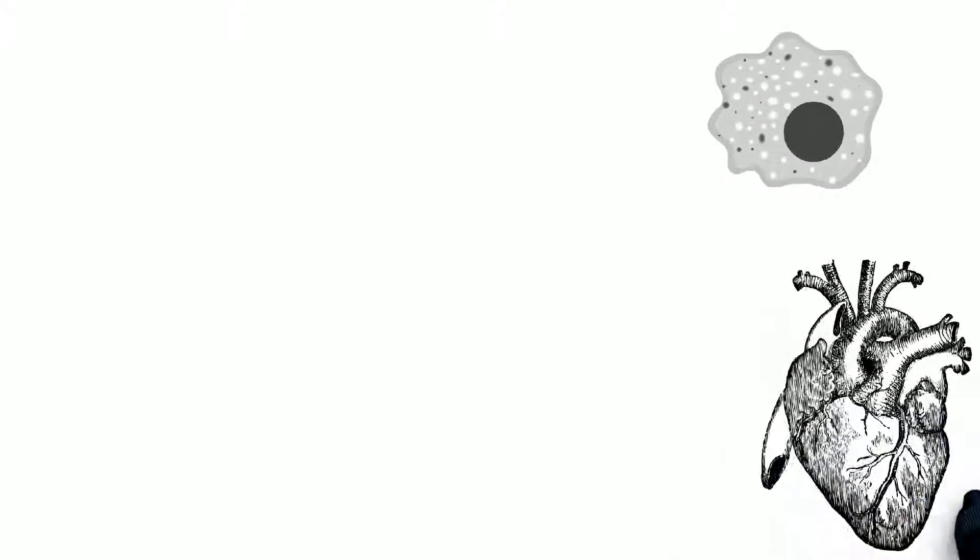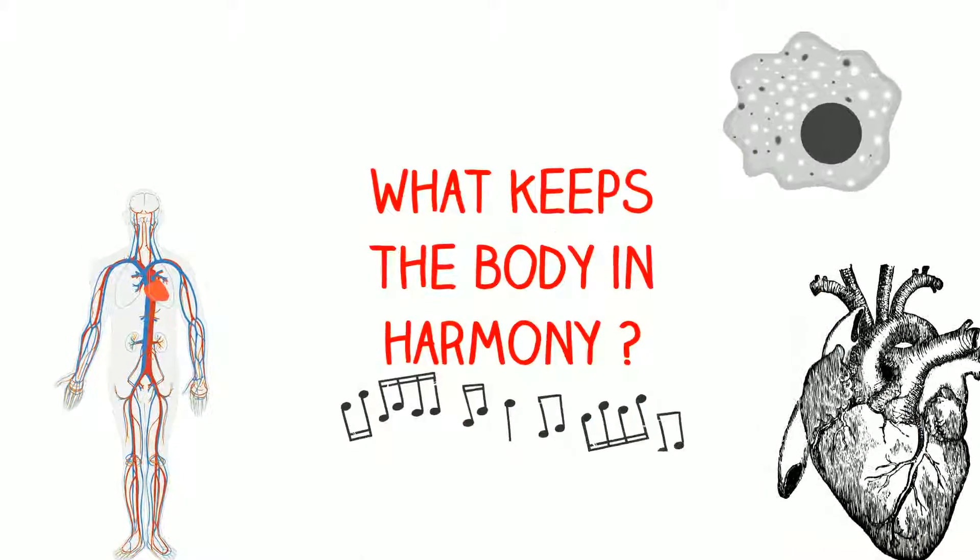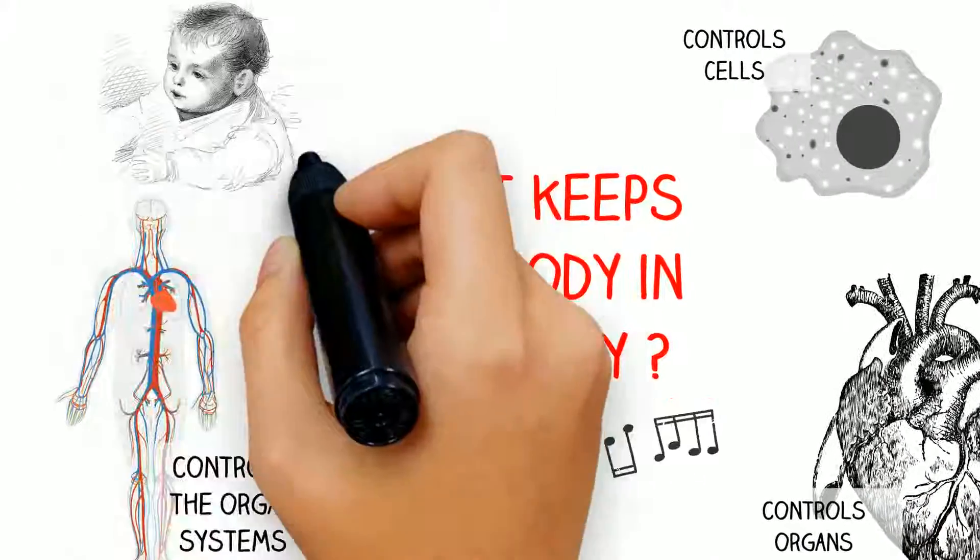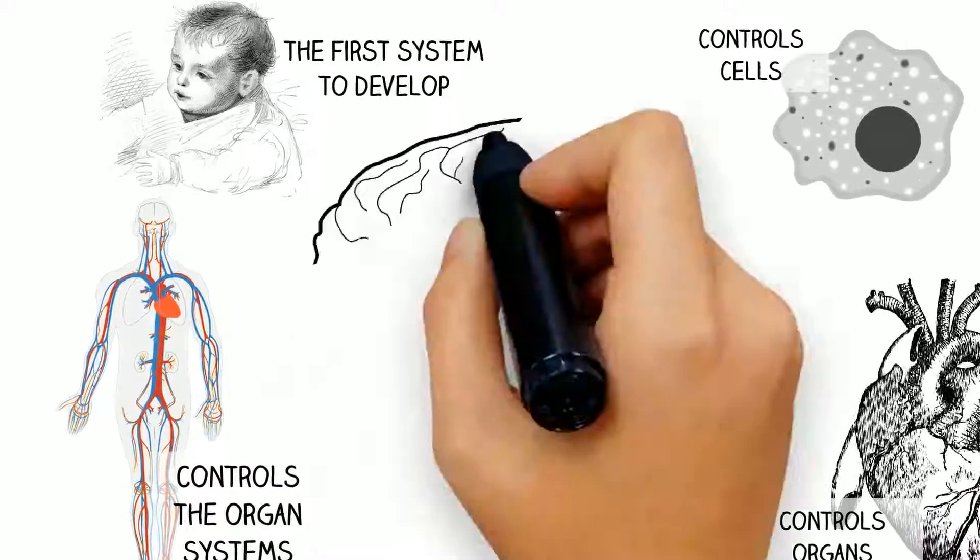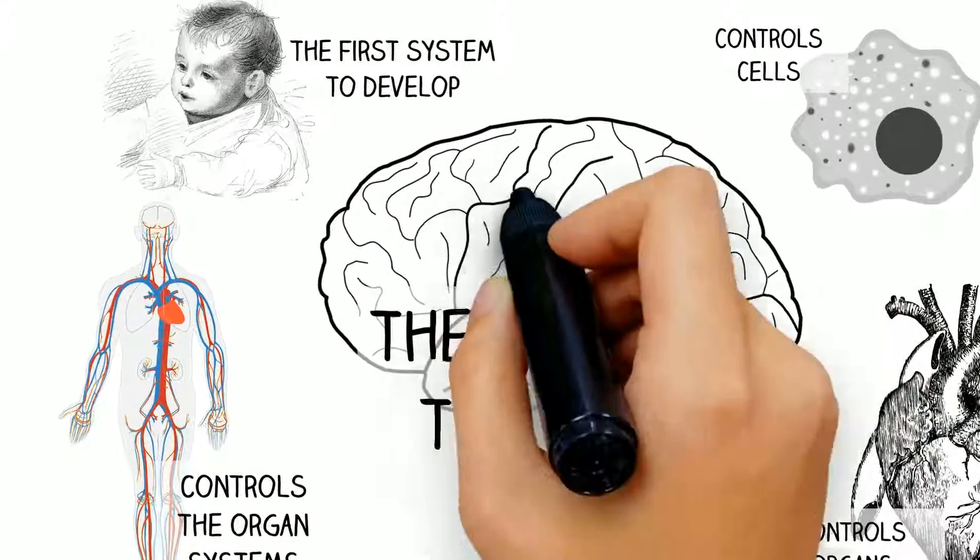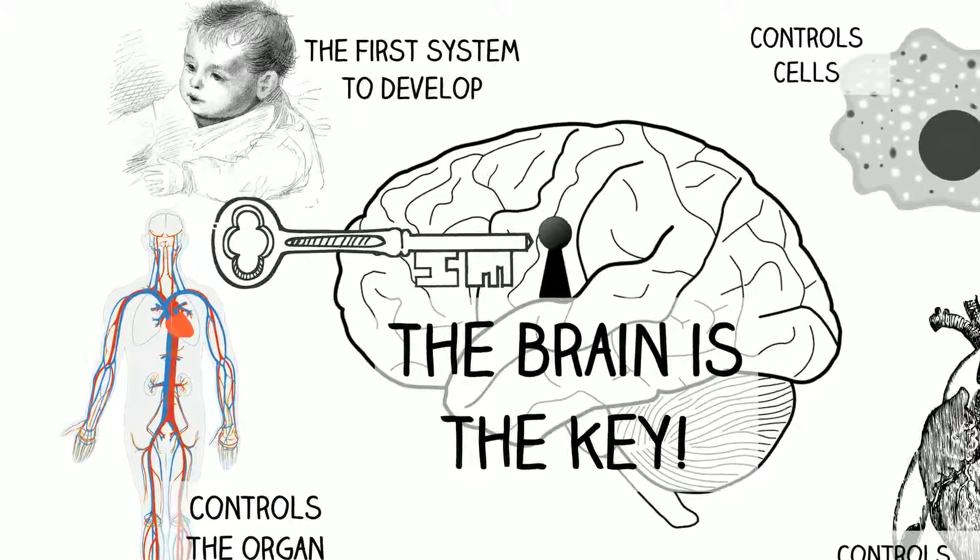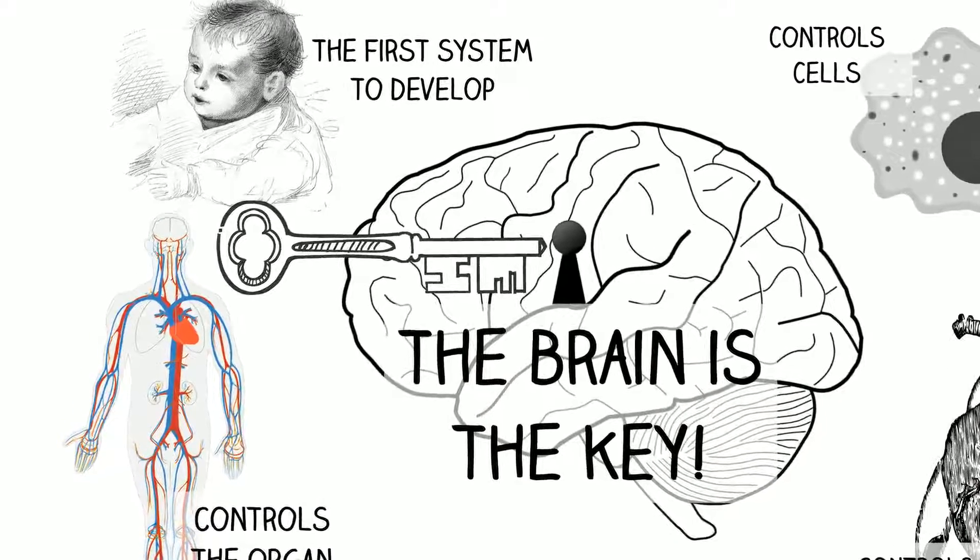For peak function, you need all cells, organs, and organ systems working together in harmony. So what keeps it all organized? From the very start, the first organ system to develop guides, directs, and controls every cell. The brain holds the key. We just help you unlock its potential.